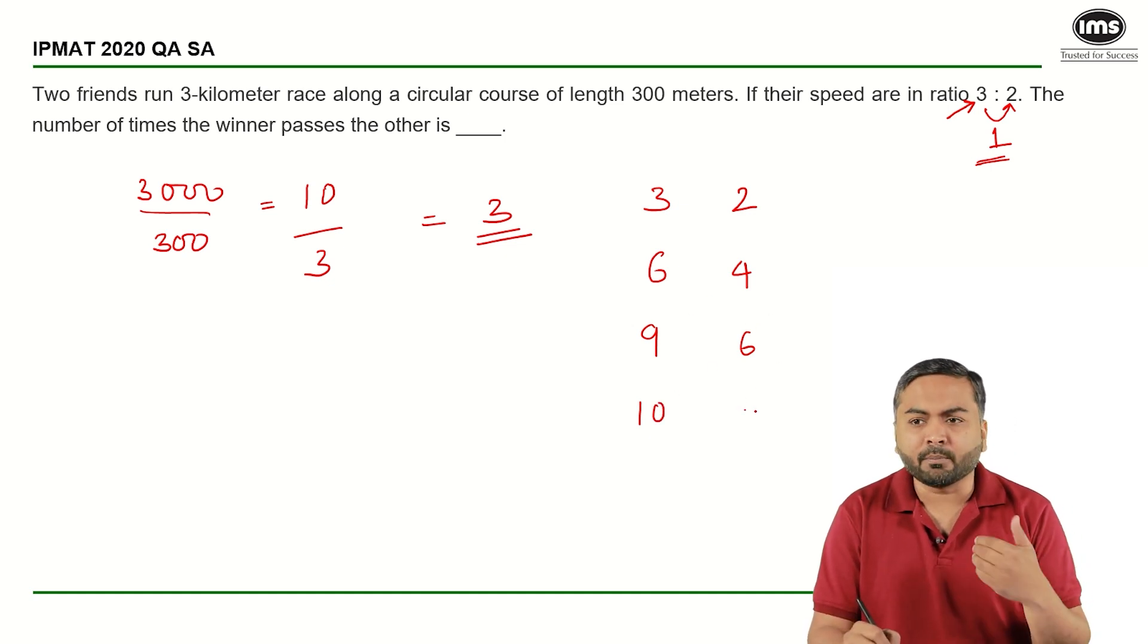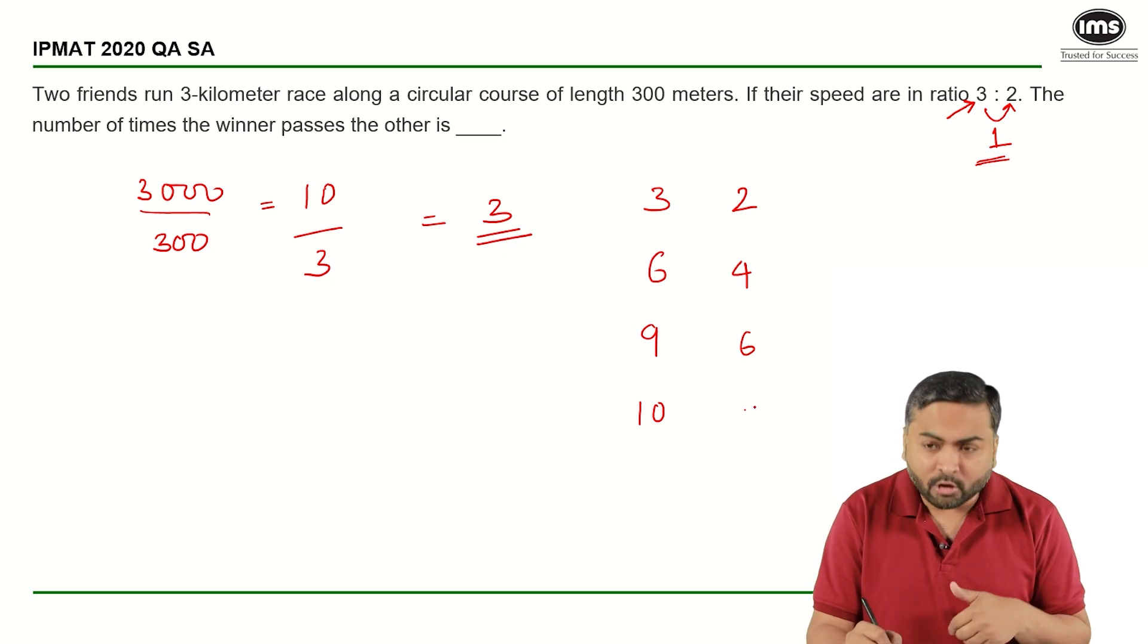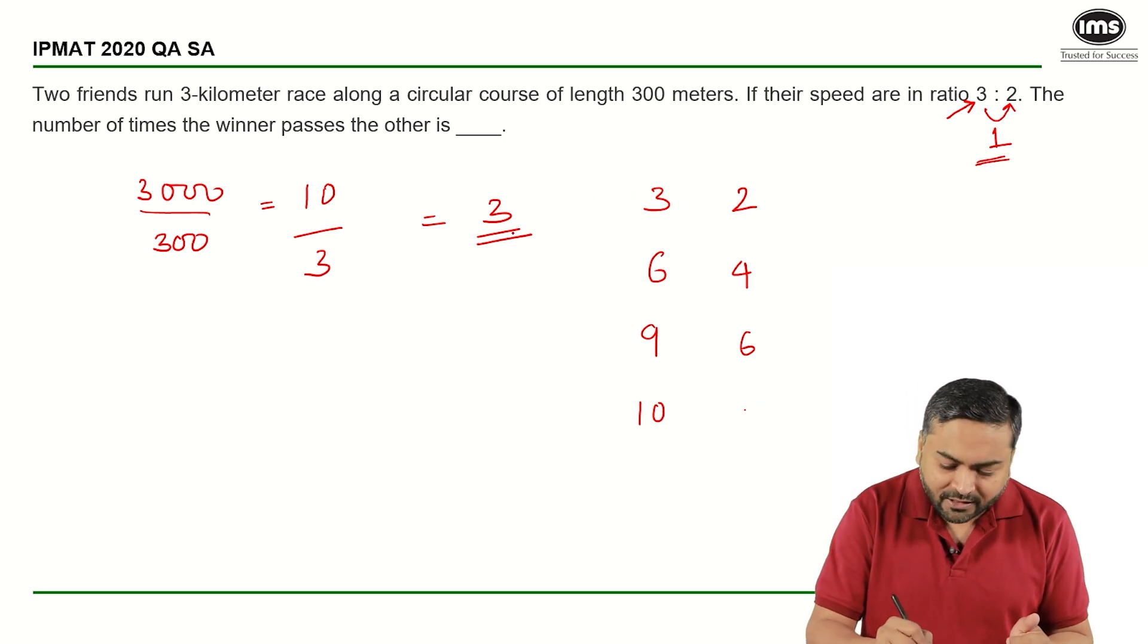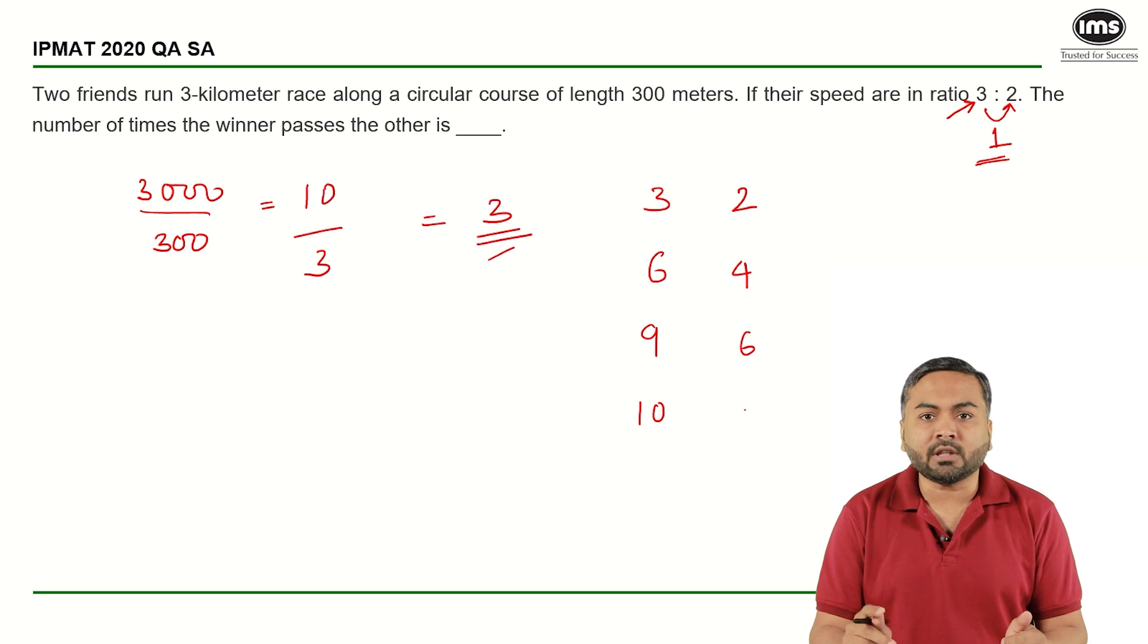This person would not have completed the entire round so they would not have met here, right? So we can say that they will meet 3 times in this particular case.